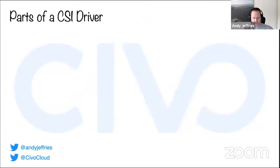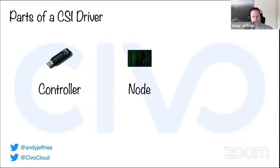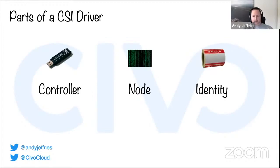So when you're writing a CSI driver, there are three main parts. The first part is called the controller — think of it as the equivalent of the USB stick: give me a new USB stick and plug it into this computer. The second part is called the node, which handles the technical stuff about partitioning, formatting, and mounting the disk. The third part is the much smaller part called identity, which is just: this is the name of my driver and I am up and running.